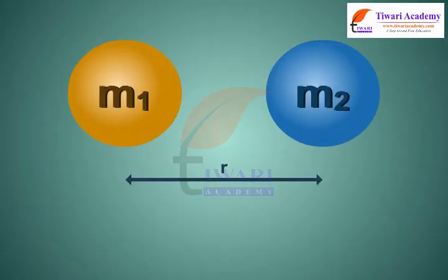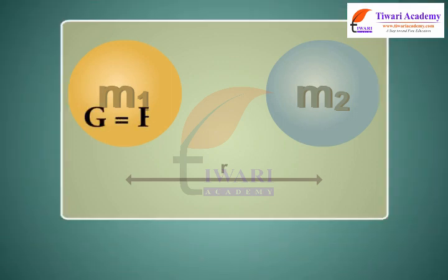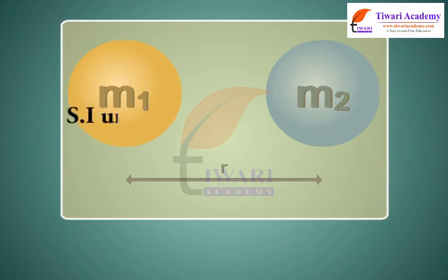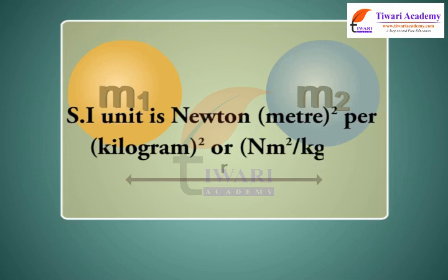By rearranging the expression for gravitational force, we have G = F × R² / (M1 × M2). The SI unit of G is Newton meter square per kilogram square, or Nm²/kg².